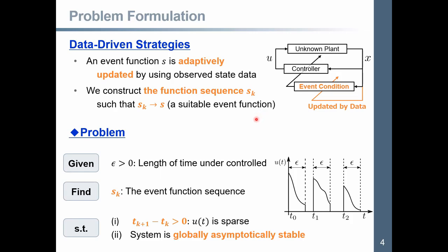Then, the problem is formulated as follows. Given epsilon, we find sk, that is the event function sequence, such that the following two statements hold. One is this inequality holds for all k, which means input is sparse. The other is this: system is globally asymptotically stable.